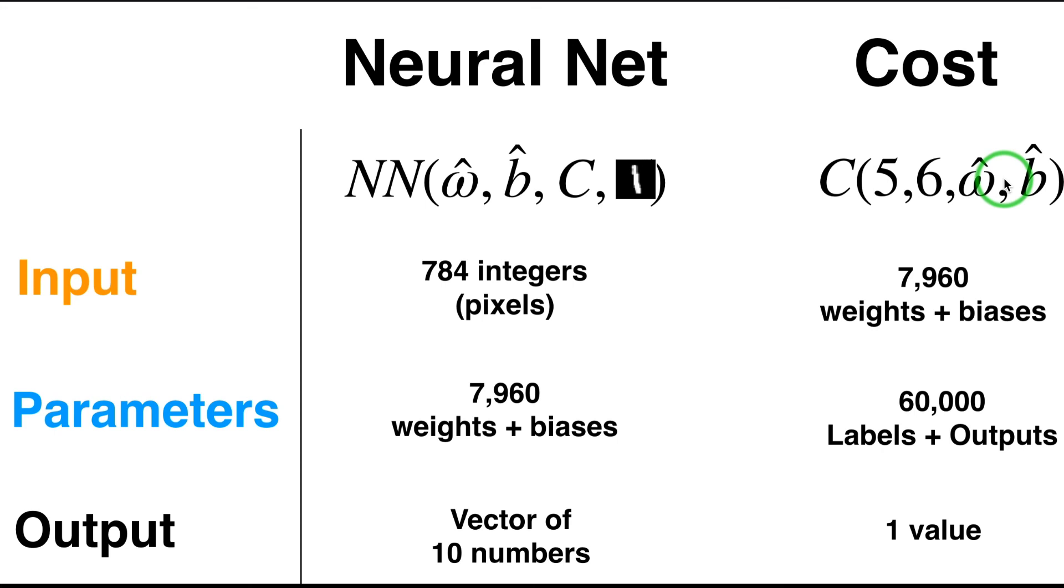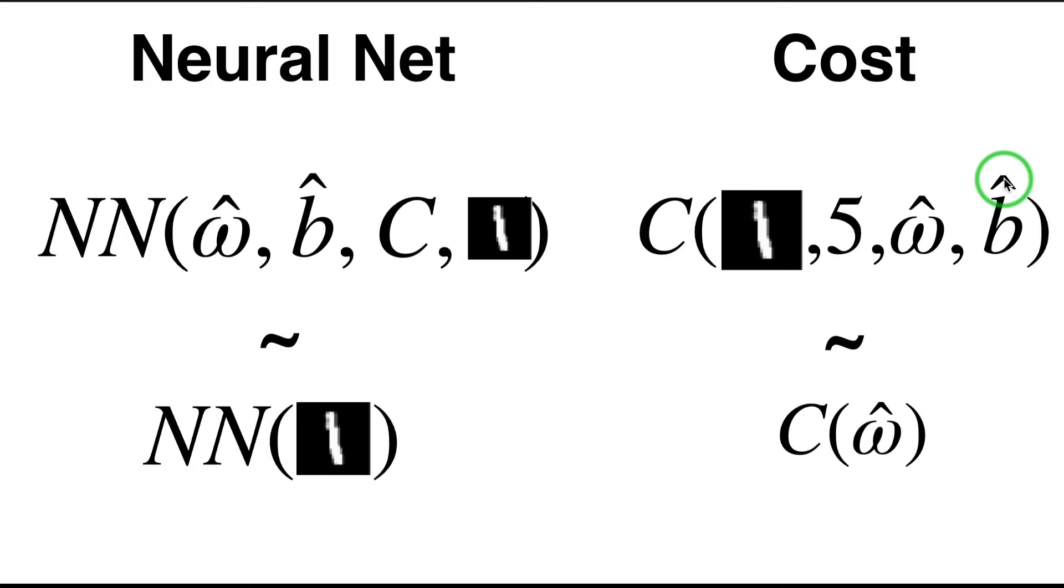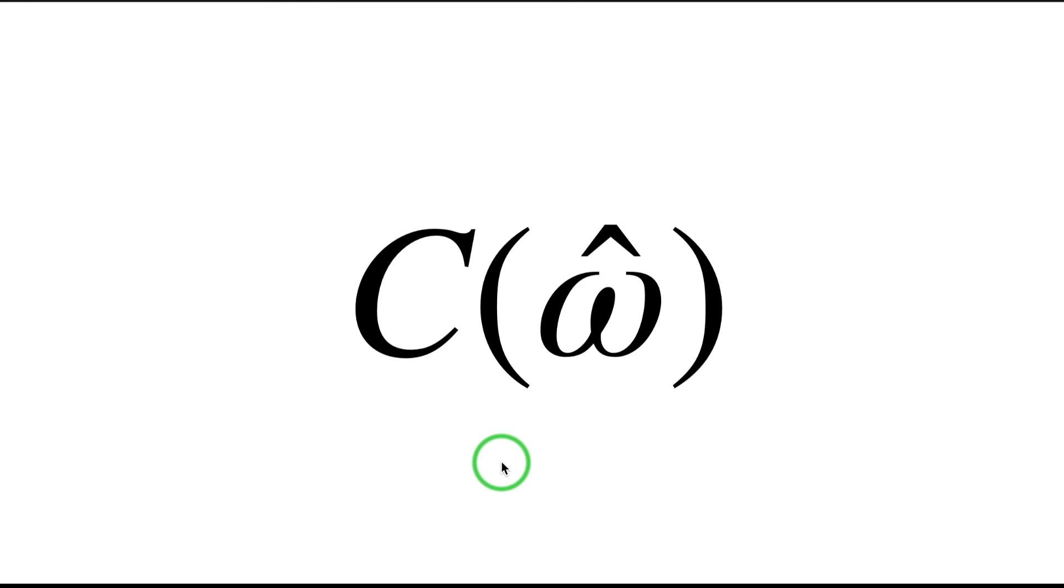It is very practical at this point to make some approximations in our notation just to simplify it a little bit. So I'm going to essentially drop all these three values here from the neural net function and the three values there for the cost function. And I will indicate with C(ω̂) the entire thing, and the neural net function is going to be indicated with this formulation.